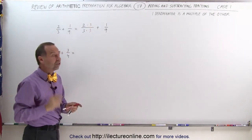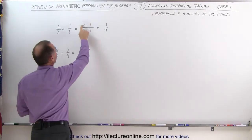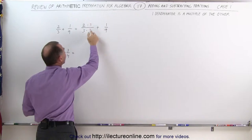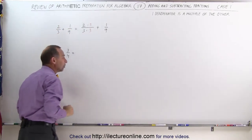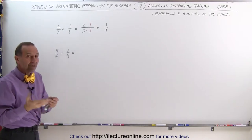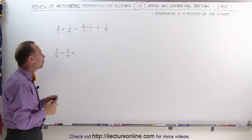Now the fraction is still the same. If I multiply 2 times 3, I get 6. If I multiply 3 times 3, I get 9. 6 ninths is the same as 2 thirds. So nothing really has changed except the format. Now it's in a format that I can actually add the two fractions together.